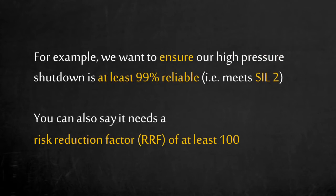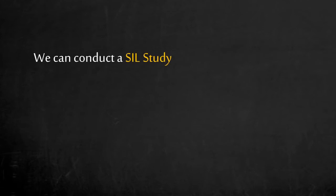We claim that our high-pressure shutdown is at least 99% reliable, or in other words, that it has a risk reduction factor of at least 100. As a safety-critical function, we want to ensure it can meet SIL 2. How can we systematically make design and operation decisions to meet the safety integrity level we need?